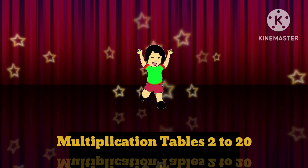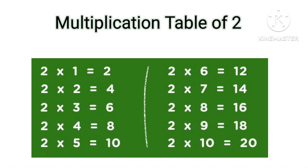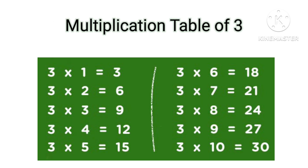Hello kids, today we are going to learn multiplication tables 2 to 20. So let's start. Table of 2: 2×1=2, 2×2=4, 2×3=6, 2×4=8, 2×5=10, 2×6=12, 2×7=14, 2×8=16, 2×9=18, 2×10=20.